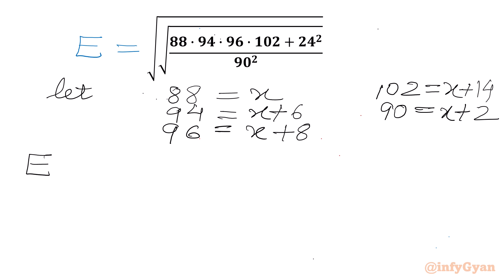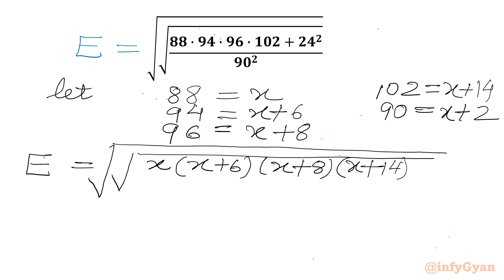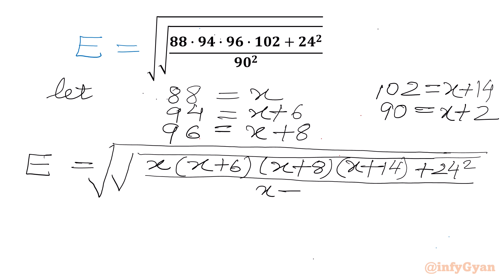Now we can write expression e equal to square root of square root. 88 is x, 94 is x plus 6, 96 is x plus 8, 102 is x plus 14. Then we have 24 squared also. In the denominator, 90 can be written as x plus 2, and it is squared so x plus 2 whole square.